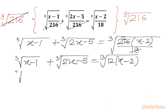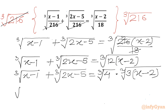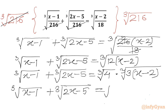We can write cube root of (x minus 1) plus cube root of (2x minus 5), then split the factor of 12 as 4 times 3. So we can write cube root of 4 times cube root of 3 times (x minus 2). Now we can write cube root of 3(x minus 1) plus cube root of 3(x minus 1), and now we will use substitutions.